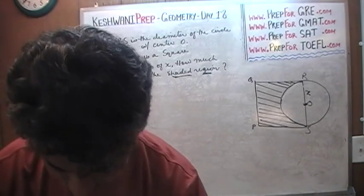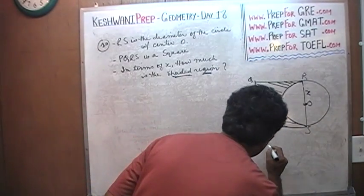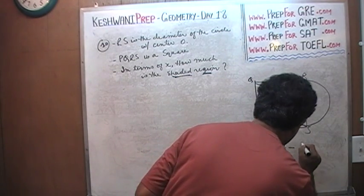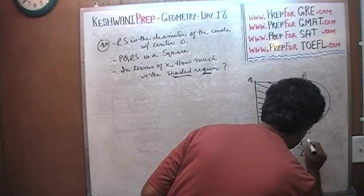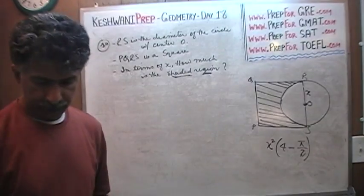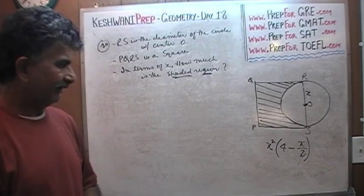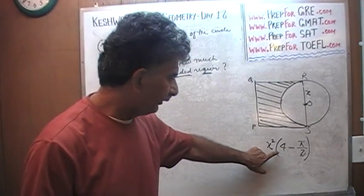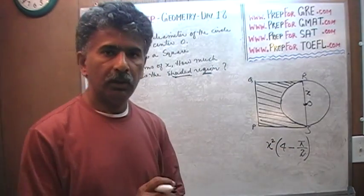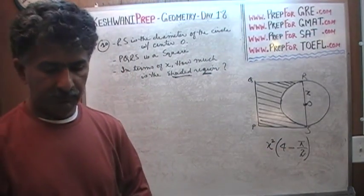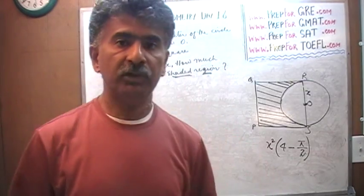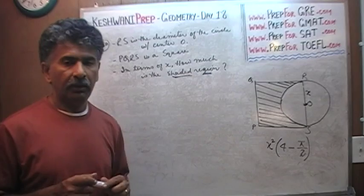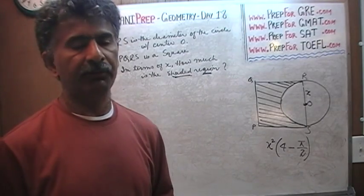Very good. The answer you should have gotten looks exactly like this, because this is the answer given to us: X squared times, in parentheses, four minus pi over two. If the answer you arrived at does not look like this, pause the video one more time and solve the problem again. Do not watch the solution — try solving it yourself first. You will get more out of it that way.